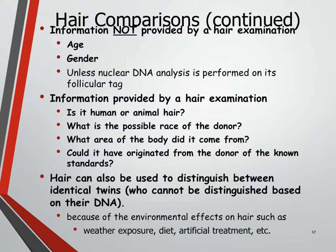This slide talks about some very important things. While hair tells us a lot of information, there are some things it cannot tell us. For example, we cannot figure out the age of a person based on their hair. We also can't figure out the gender of a person based on their hair — male hair doesn't look any different than female hair. The only way we can perform DNA analysis is if we have tissue or a follicular tag attached to the hair roots. Without that, we can't pinpoint an individual.